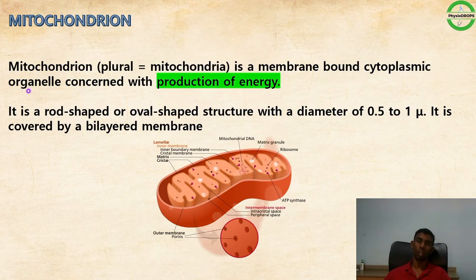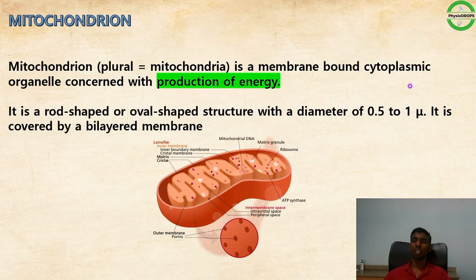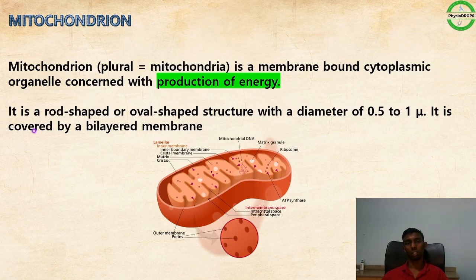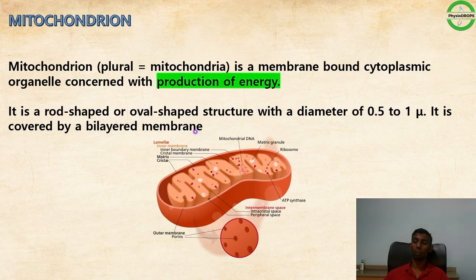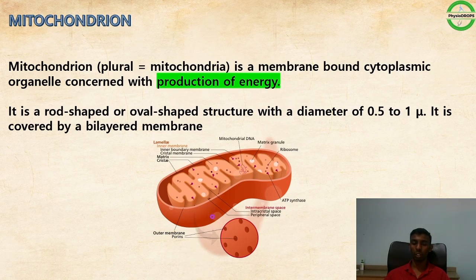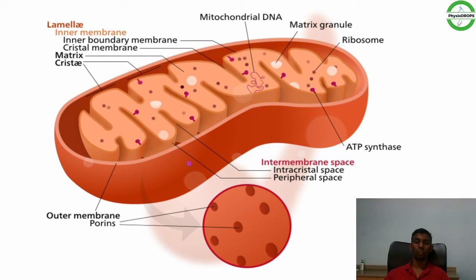Mitochondria are membrane-bound cytoplasmic granules concerned with the production of energy — they are called the powerhouse or power plant of the cell. They are round or oval shaped with a diameter of 0.5 to 1 µm, covered by a bilayered membrane with an outer membrane and an inner membrane. Inside, there is DNA, matrix, matrix granules, ribosomes, ATP synthase, and an intermembrane space.